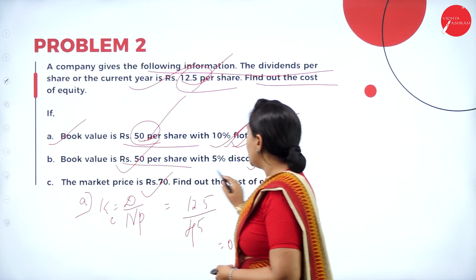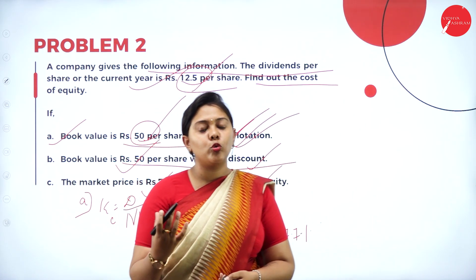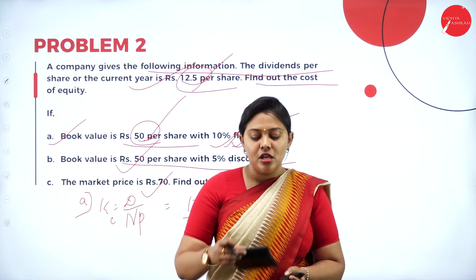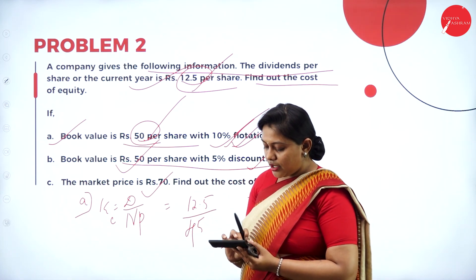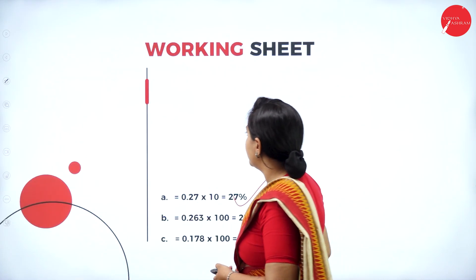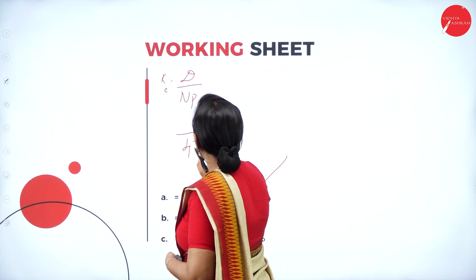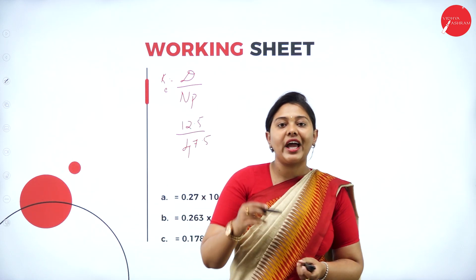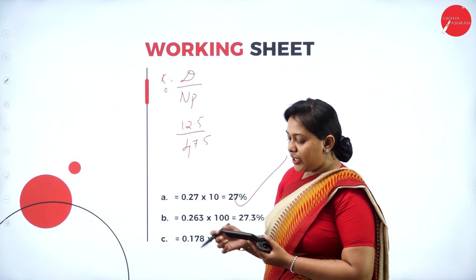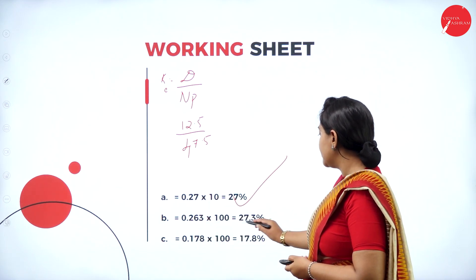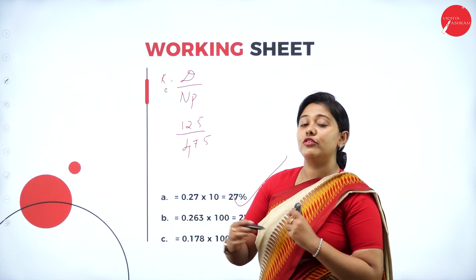Condition B: book value rupees 50 per share with 5% discount. Net proceeds = 50 − (50 × 5%) = 50 − 2.5 = rupees 47.5. Cost of Equity = 12.5 ÷ 47.5 = 0.2631, which rounds to 26.3%.